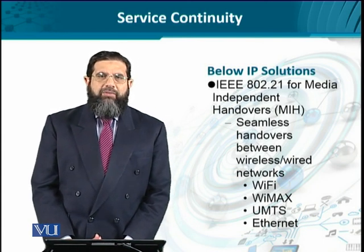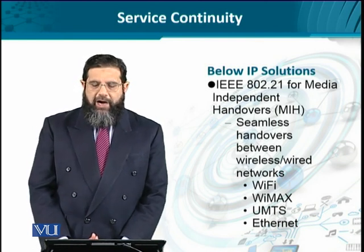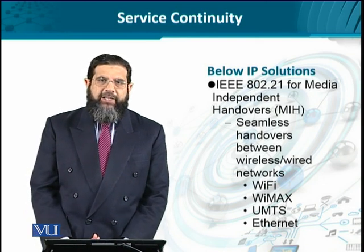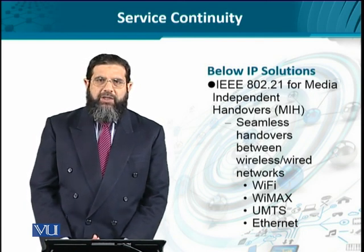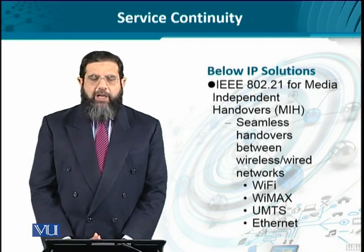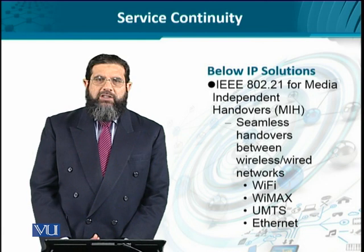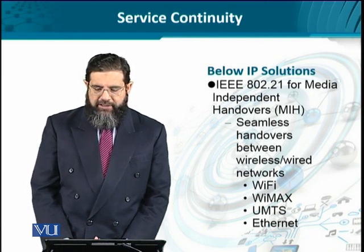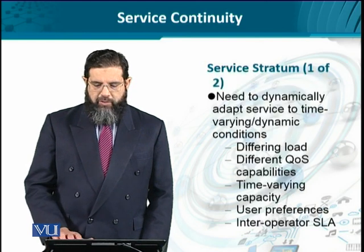At the network layer, below IP, there are certain initiatives — for instance, IEEE 802.21, the Media Independent Handover. It is a mechanism through which the local identifiers of different networks are exchanged with each other to allow seamless handover. This particular handover is IP agnostic, meaning the IP address is not changing but the physical data link layer identifiers are changing. Protocols like Wi-Fi, WiMAX, Ethernet, and UMTS use their own identifiers against the same end-to-end socket to ensure the service stays continuously available.